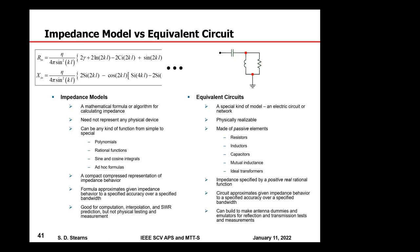You can also build physical dummies using the equivalent circuit — one-port emulators for reflection measurements or two-port emulators for transmission measurements. For example, to measure error vector magnitude (EVM) of a digital signal through an antenna link, you put two antenna emulators back to back, apply your generator to one feed point and your receiving test equipment to the other.